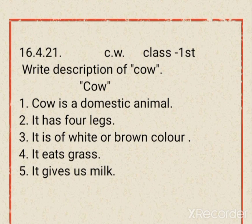I have chosen white or brown here. You can write black also. And if you are not comfortable with any sentence, you can change it also. The first letter of each sentence should be capital — C in cow, I in it. These first letters should be capital. After each sentence, put a full stop. Full stop is a must. You have to write these things in beautiful cursive handwriting in the description of cow in your notebook.